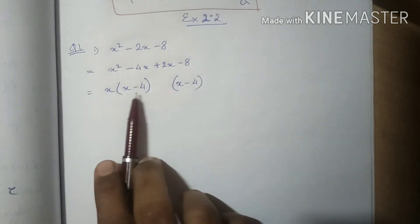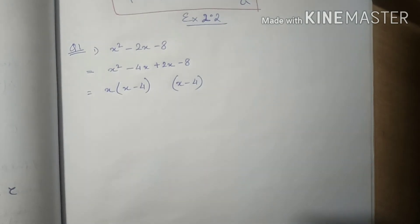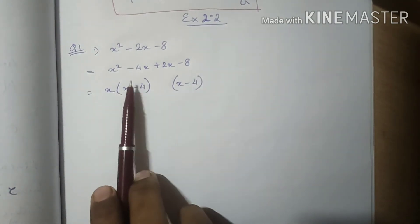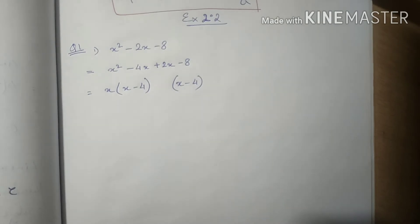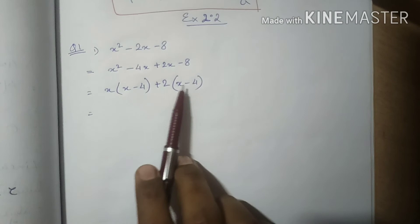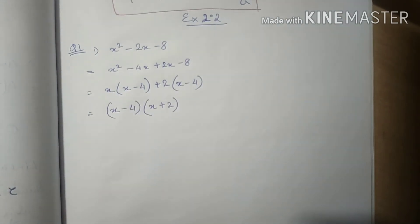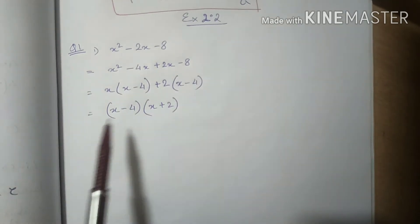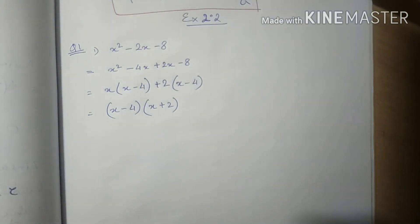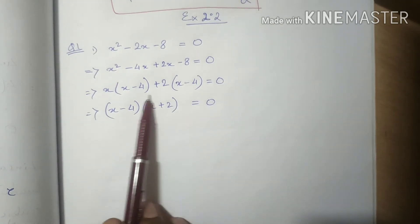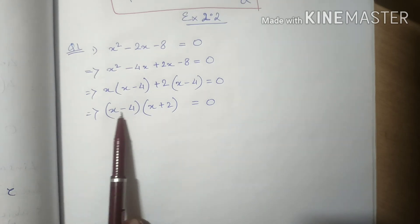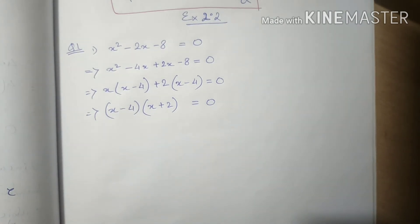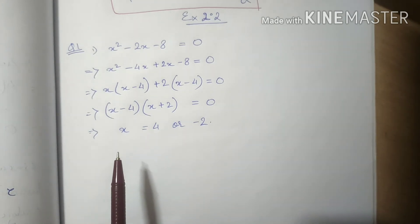Take common from the first two terms, then write the same factor. These two bracketed groups should be equal — if not, either the question or your working is wrong. Then write out the factors. This is splitting the middle term. To find the zero of the polynomial, set the polynomial equal to zero and solve for x.